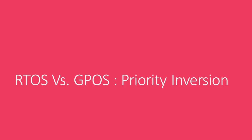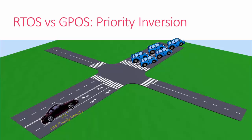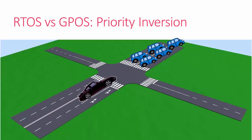Now let's discuss the difference between RTOS and GPOS in terms of priority inversion. Let's say you are going out with your car, and we will assume your car as a lower priority vehicle entering a busy traffic intersection.